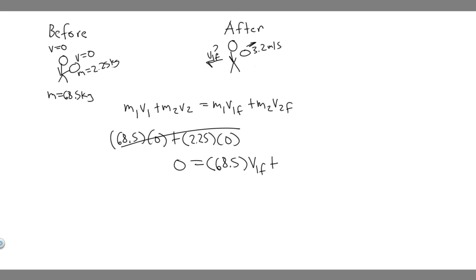Plus M2. So M2 is going to be the mass of our tool, which is 2.25. And then we multiply by the velocity, final velocity of our object, which is 3.2.